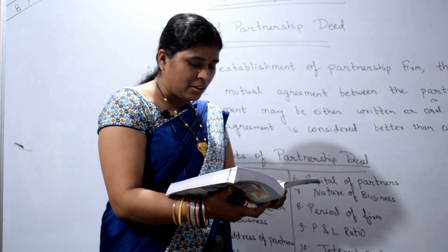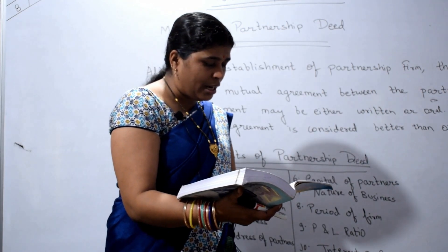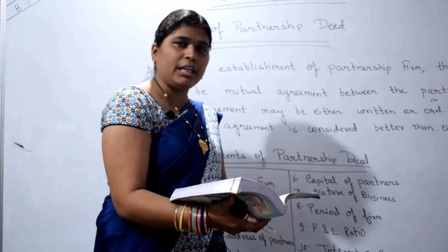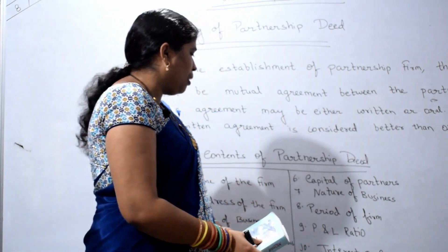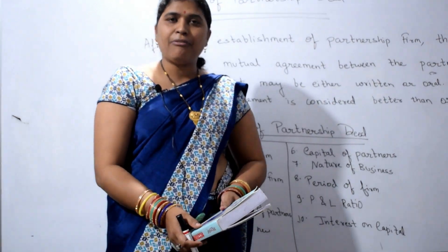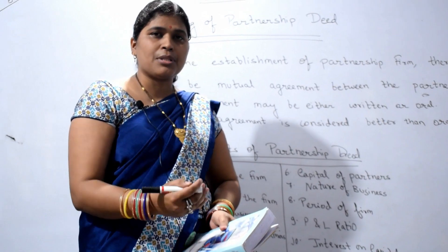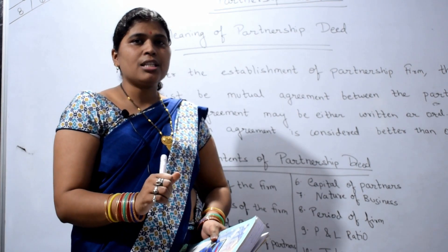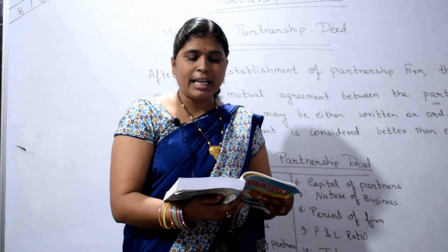Nature of business — what type of product the firm will deal in. Whether the firm will carry on wholesale business or retail business. Period of firm — when will the business session start and end, for example 1st April to 31st March, or 1st January to 31st December.